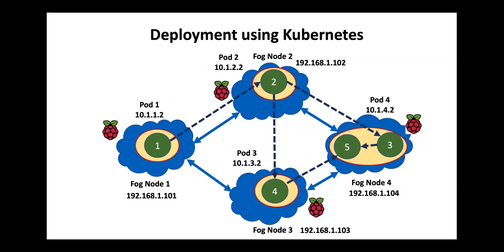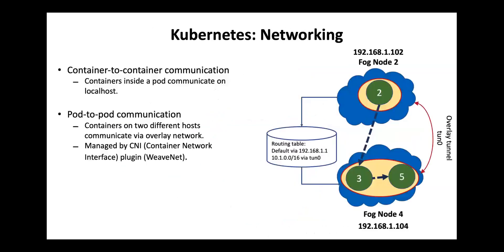Next, we deployed the containers of the application distributed over the network so that they need to communicate over the network to achieve the application functionality. Each container is placed on a different Raspberry Pi, deployed in a different pod, and they communicate over the network. We observed that the time delay and video quality achieved at container 5 shows a greater time lag compared to the first scenario. Each pod has a different IP address, so we need to enable networking between pods on different fog nodes. To enable this, we used WeaveNet as overlay tunneling, which stores a routing table for communication between the nodes in the Kubernetes cluster.